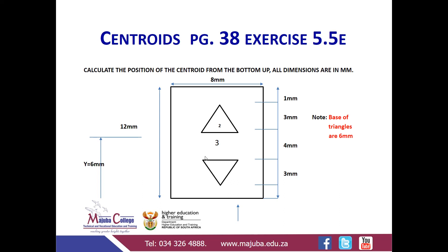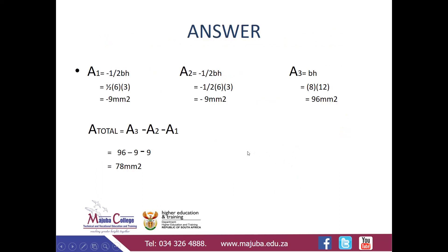Exercise 5.5e. The calculation says: calculate the position of the centroid from the bottom up; all dimensions are in millimeters. Firstly, we need to establish how many sections we have. We've got section one which is a triangle facing downward, section two which is another triangle facing upward, and section three which is the big rectangle.